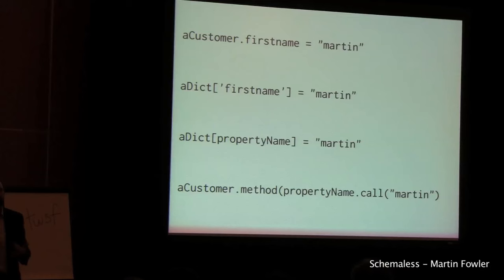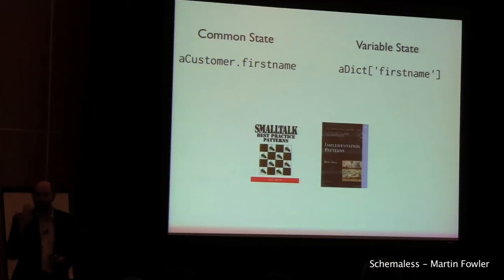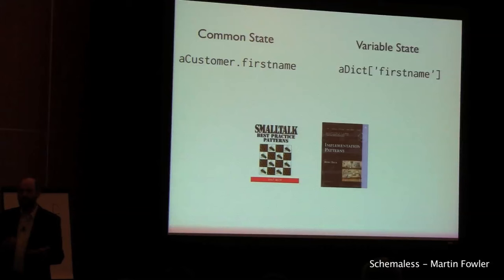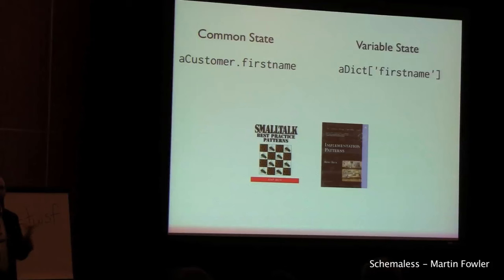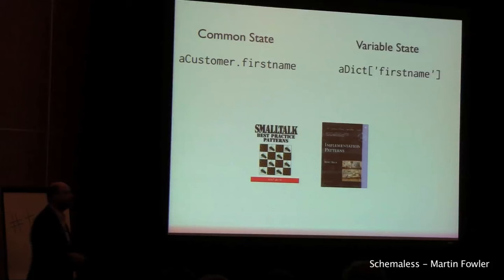This notion of a difference between schema and schemalessness in memory is an old distinction. It was brought out by Kent Beck back when he wrote 'Smalltalk Best Practice Patterns' in the mid-90s. He talks about in the Smalltalk world we have this trade-off: is it good to have what he called 'common state,' where we have fixed method names, or is it good to have 'variable state,' where we use dictionaries? There are real trade-offs between the two — basically the same kinds of advantages that exist for databases.